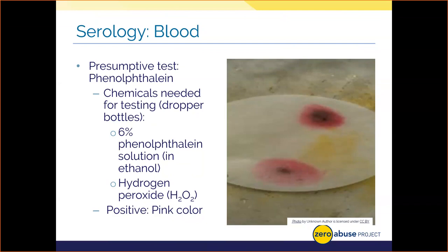The easier you explain a scientific concept, the better triers of fact understand your methods and results, and the more confident they'll feel in the forensic evidence. There are many opportunities for other compounds, such as plant byproducts, to cause false positive reactions. Because some plant components can induce a false positive for phenolphthalein, and because this test doesn't tell us if the blood is human or not, we have to use a confirmatory test to make sure we are looking at human blood.